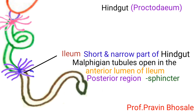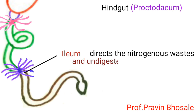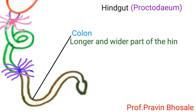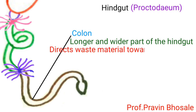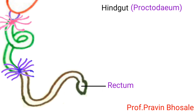Malpighian tubules open in the anterior lumen of ileum near the junction of midgut and hindgut. The posterior region of ileum contains a sphincter. Ileum directs the nitrogenous waste and undigested food towards the colon. Colon is a longer and wider part of the hindgut.